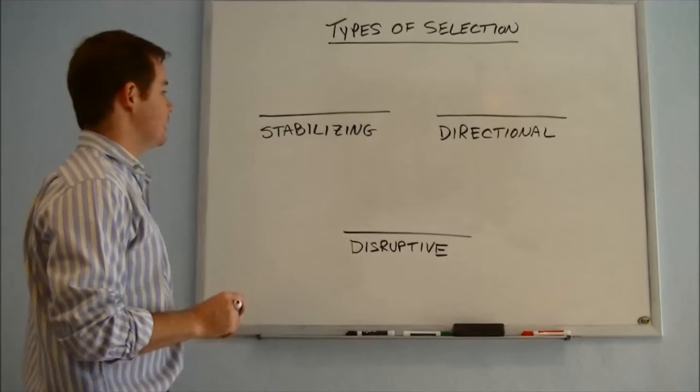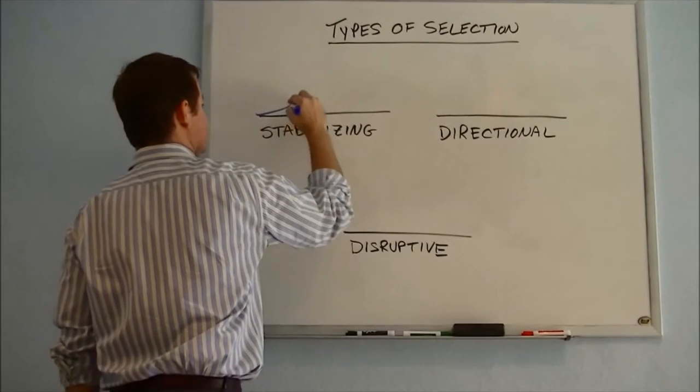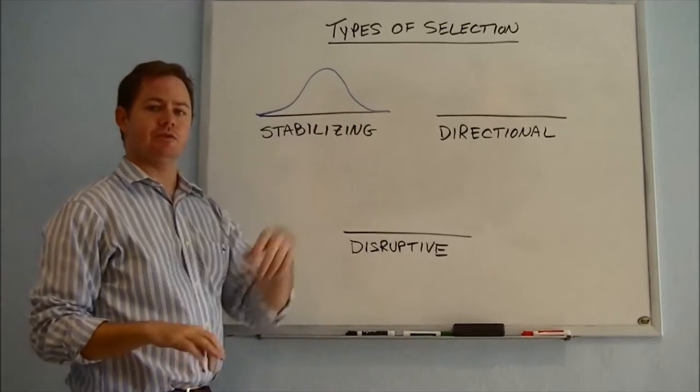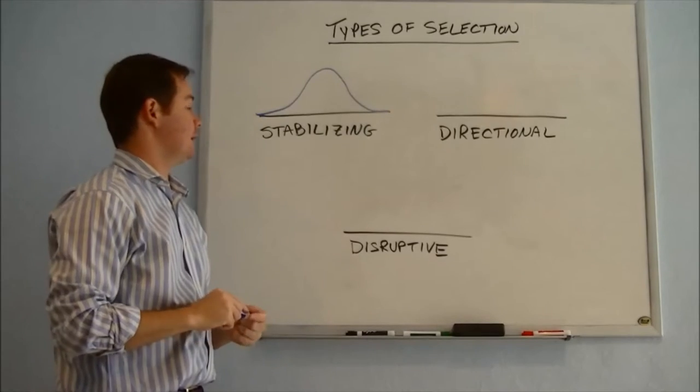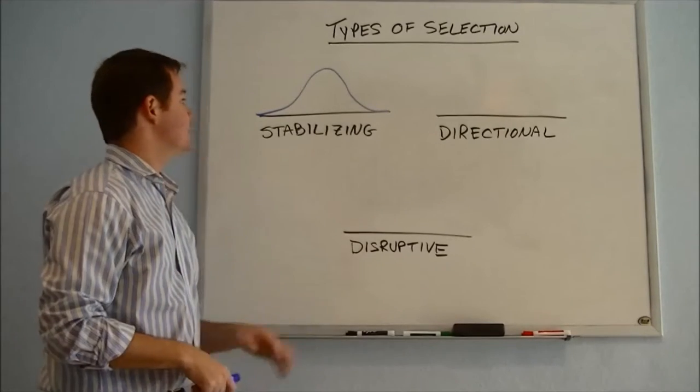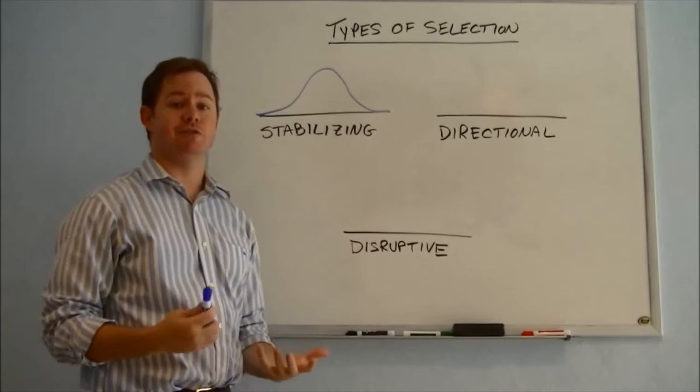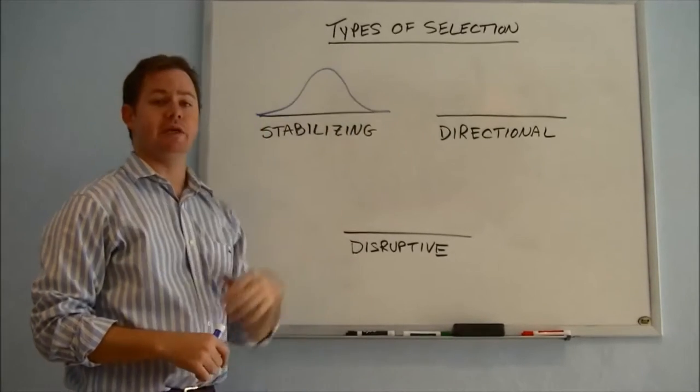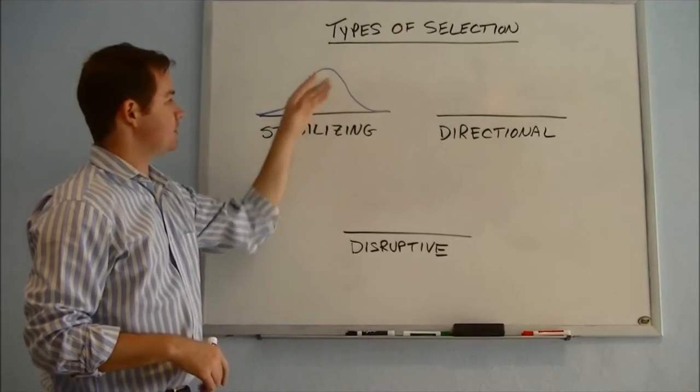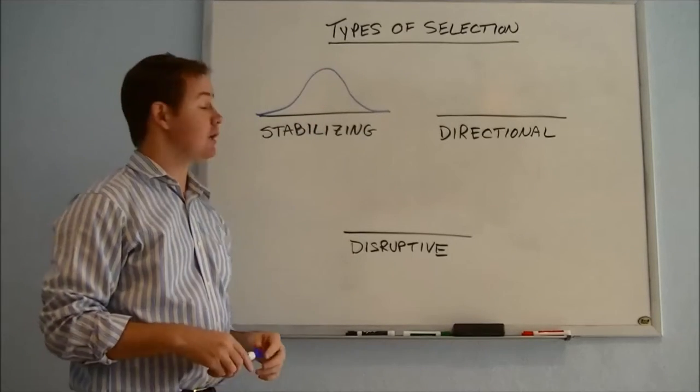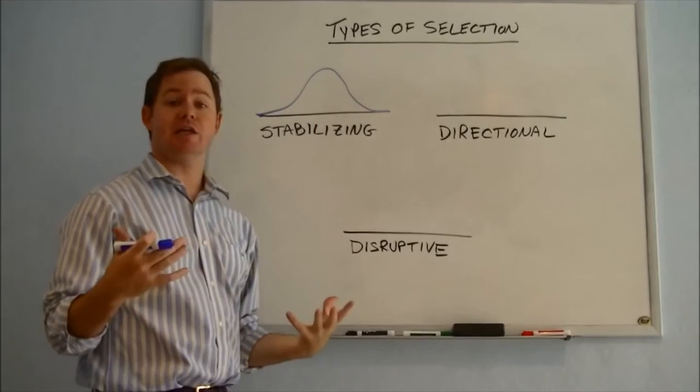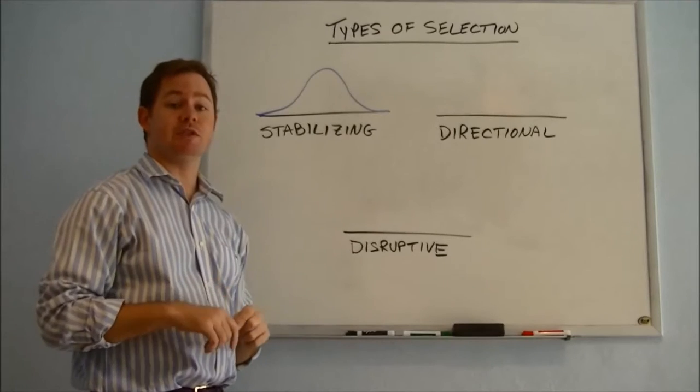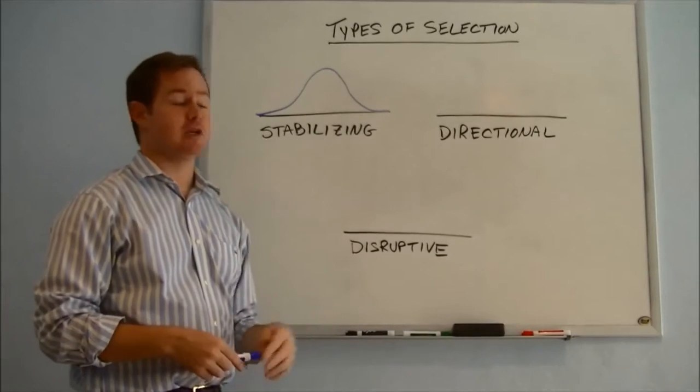Stabilizing selection is when you see the largest concentration right in the middle. So in terms of size, that would say that medium size is favored for survival. Too small or too big can be problematic, but right in the middle, that's where we see the greatest concentration of the species in terms of size. And then genetically, that means that particular trait is a little bit more frequent in the gene pool. So that's what gets passed down most commonly.